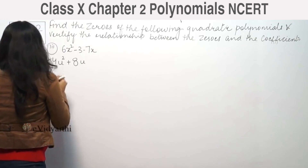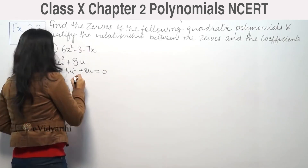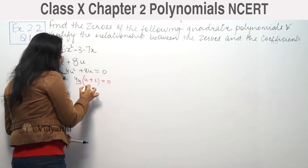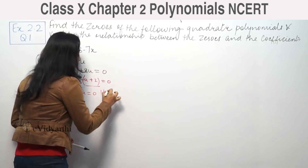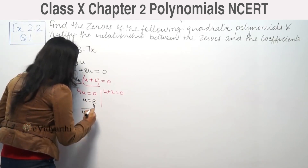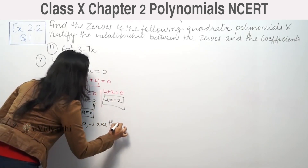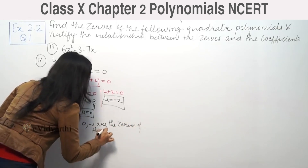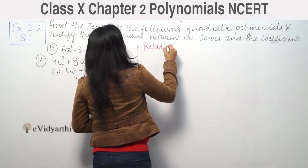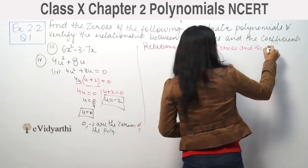Part number 4 is 4u squared plus 8u equal to zero. We take 4u as the common factor, giving us 4u times u plus 2 equal to zero. Setting each factor to zero: 4u equals zero gives u equals 0, and u plus 2 equals zero gives u equals minus 2. So the two zeros of the polynomial are 0 and minus 2.